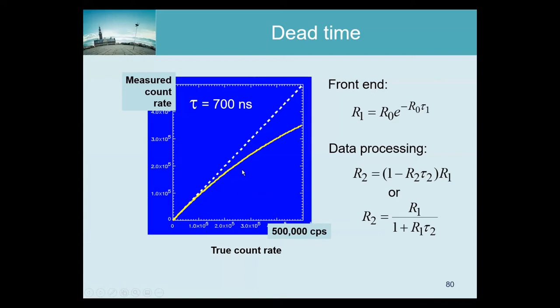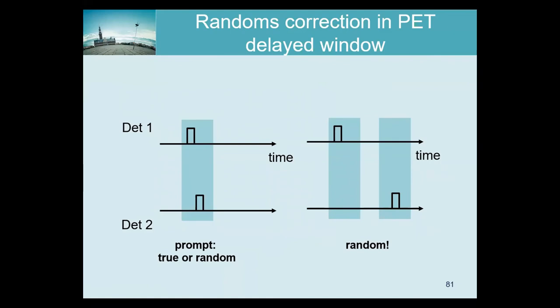This can happen clinically, for example during a dynamic scan with a bolus injection, where all the activity arrives almost simultaneously in the heart. If you are imaging the heart you then see a huge dose and even a good system may saturate at that time. In principle it is corrected, but the correction breaks down at very high count rates. Current systems are pretty fast, so it should normally not be a problem.